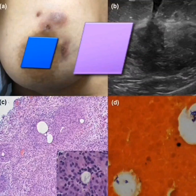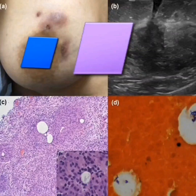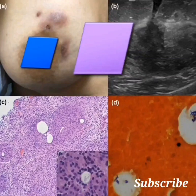Granulomatous Mastitis, GM, is an uncommon benign chronic inflammatory breast disease first described by Kessler and Wallach in 1972 that can mimic inflammatory breast cancer and periductal mastitis.